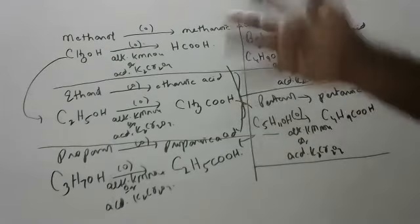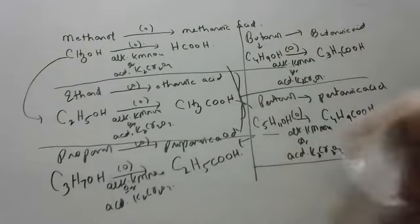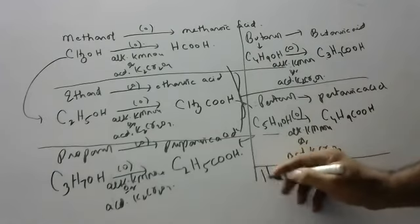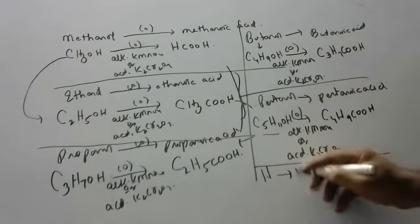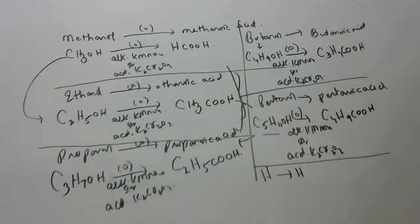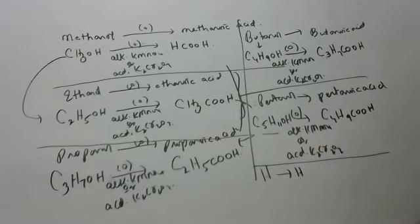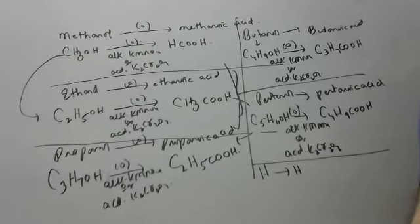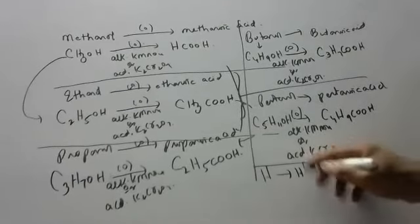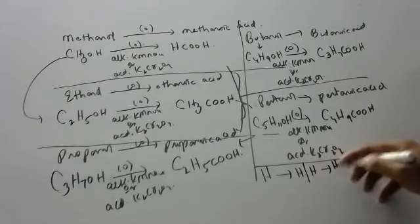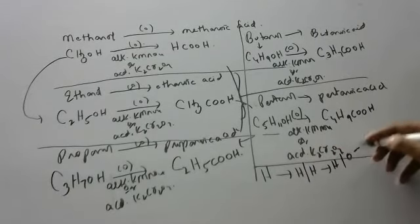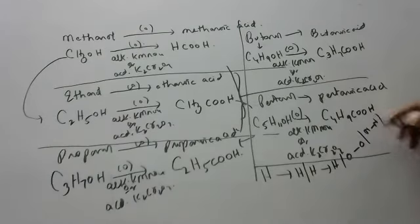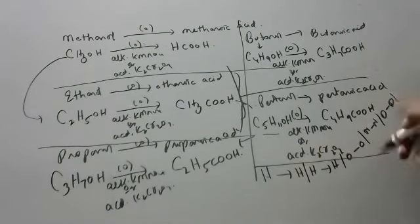I told you 5 examples. Now you do the next 5, children. Hexanol gives hexanoic acid. After this: heptanol gives heptanoic acid, octanol gives octanoic acid, nonanol gives nonanoic acid, and decanol gives decanoic acid. This is your homework — practice hexanol to decanol and send it to the teacher, and I will check who is submitting homework and who is not.